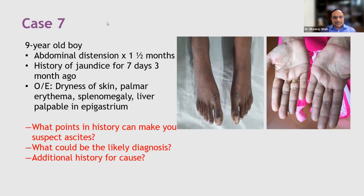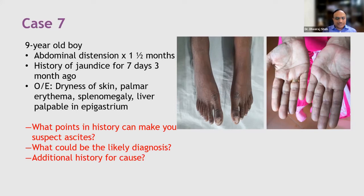So irregular enlargement in the epigastrium, presence of splenomegaly, palmar erythema, and dry skin all suggest chronic liver disease. Remember, you do not need to have jaundice to diagnose chronic liver disease — even a history of jaundice is sufficient, and even that may be missing because slowly developing chronic liver damage does not result in jaundice. Jaundice appears only in acute-on-chronic presentation or end-stage decompensated liver disease. For evaluating the cause, take history of blood transfusion, intramuscular injections from unreliable sources, family history of similar disorder in parents, siblings or cousins, and history of any drugs or toxins.